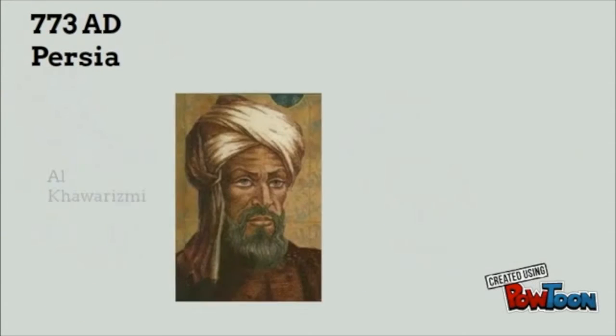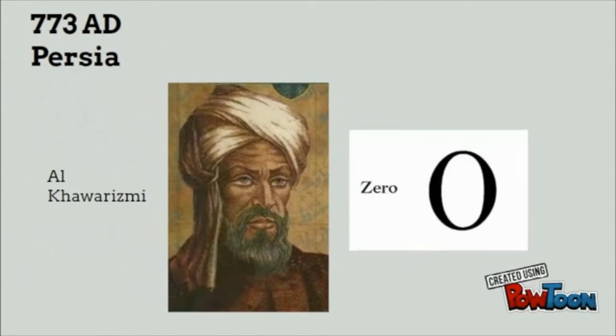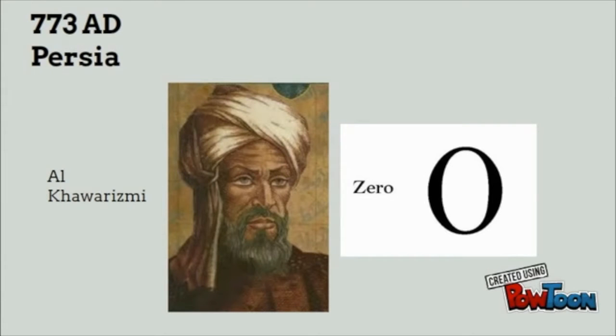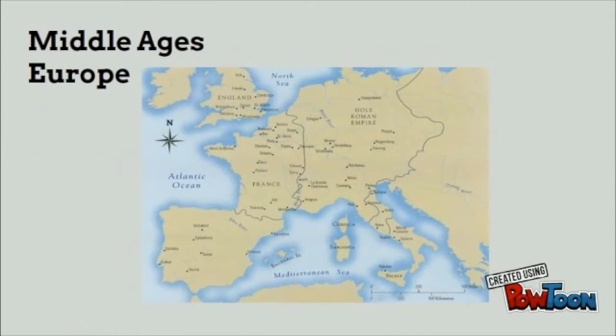Persian mathematician Al-Khwarizmi suggested that a circle, which symbolizes emptiness, be used to represent zero. The concept of zero spread to Europe after it was developed by other civilizations.